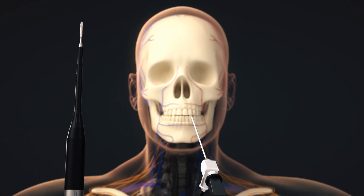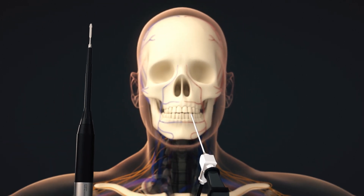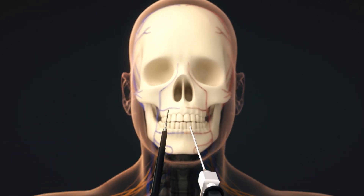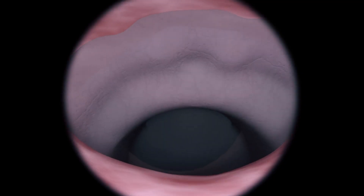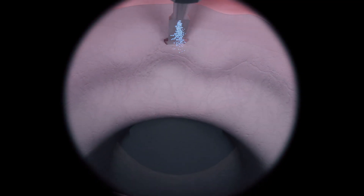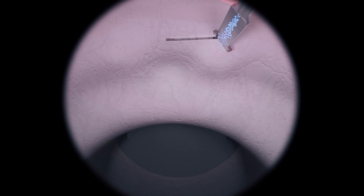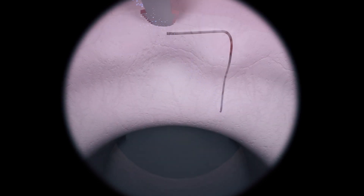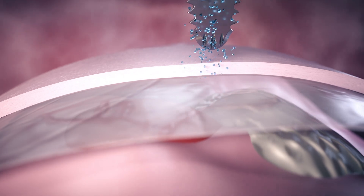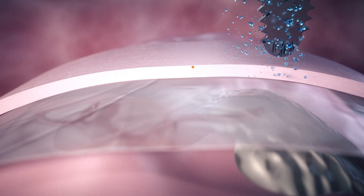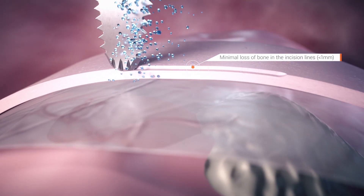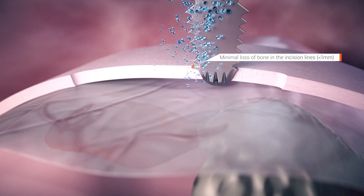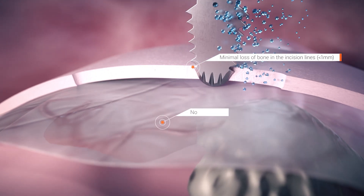The inner sphenoidal septum down to the floor of the cell is removed using cutting instruments. After free access to the cell floor has been created, the surgeon opens the interior wall of the cell floor with piezo surgery, preserving the integrity of underlying structures.